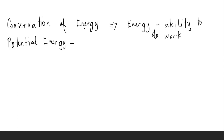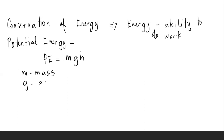Under energy, we have the types of energy. Potential energy — energy at rest. The formula for potential energy is equal to mass times gravity multiplied by the height, where M is the mass, G is the acceleration due to gravity, and H is the height.